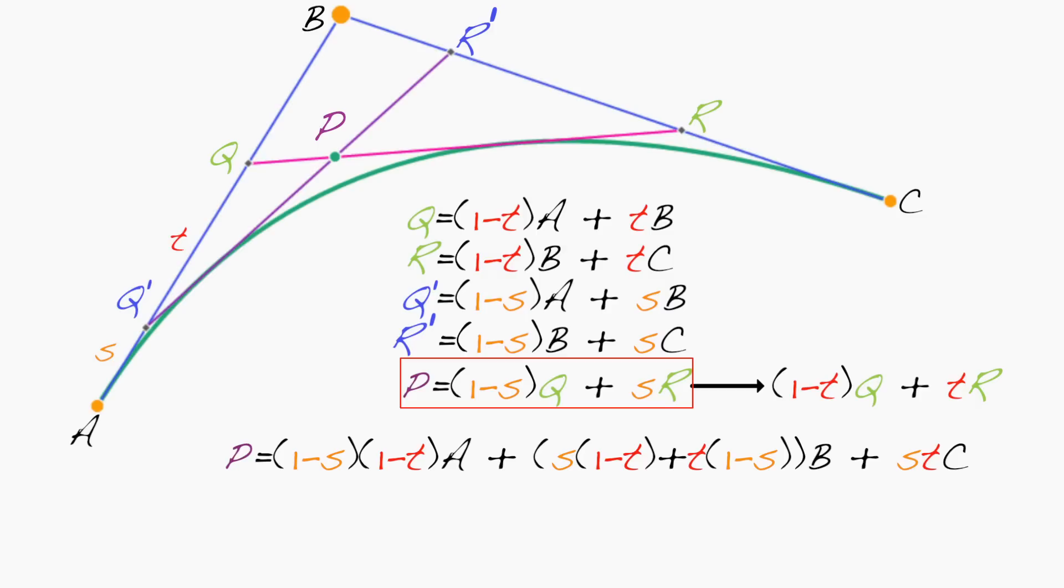And now if I rewrite this using these expressions for q prime and r prime, I see I can write p as (1-t)q prime + t r prime.